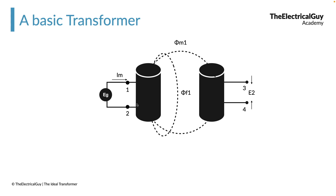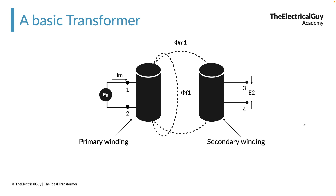The coil that is connected to the source is what we call the primary winding, or simply the primary. The other coil which will be connected to the load is what we call the secondary winding, or simply the secondary. So the winding connected to the source is the primary winding, and the winding connected to the load is the secondary winding.